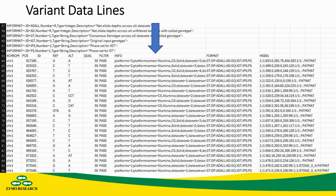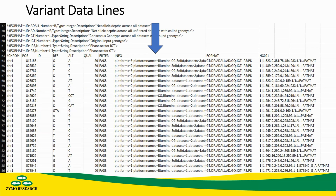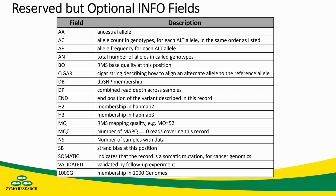Going on, we can look at our info column. Our info column is going to have various key values such as platform count equals 3, platform names equals Illumina, as well as Complete Genomics and SOLiD. These values will be defined in the info section of our metadata, and these can get extremely long — all truncated here because they are the longest columns present. Within info fields, there are a few reserved values. This list shows values that are generally considered reserved but optional, meaning if any of these abbreviations are present, they should mean exactly what is shown here — they are not left to the program's discretion.